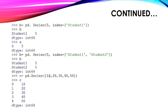Now we will see increasing the indexes. If we increase indexes but there is only one element to store, it will copy the same value to multiple indexes. For example: b = pd.Series(5, index=['student1', 'student2']). With two indexes and one element, the value 5 will be copied and stored at both student1 and student2.